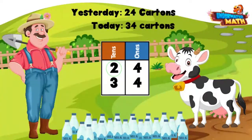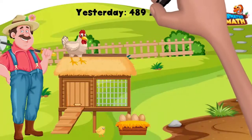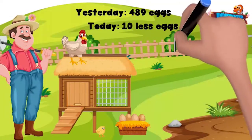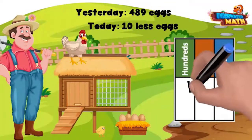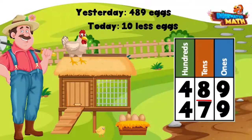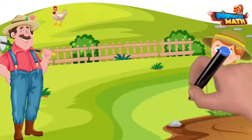Thanks for making all of that milk, Betsy! Let's walk over to our chicken coop. I collected 489 eggs yesterday. Today I collected 10 less eggs. Remember, when working with 10 more and 10 less, we need to look at the tens place. The tens place in 489 is an 8. Since I collected 10 less eggs today, that 8 is going to come down to a 7. 479 is 10 less than 489.